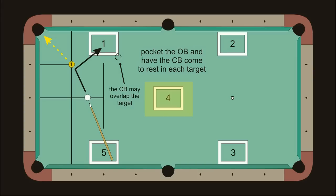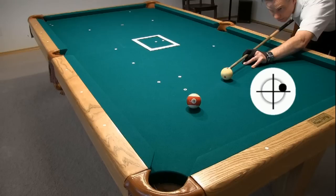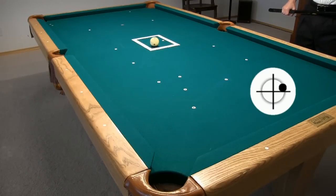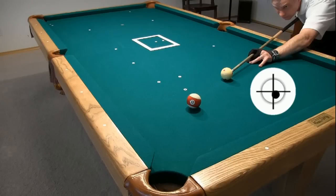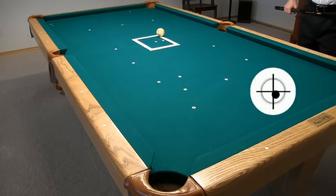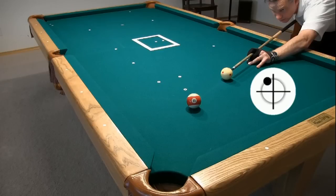Now let's look at the fourth target position. Here we can use a similar rolling cue ball path as we did for target position 3 — we just need a little more English than before. You could also use a stun shot with a touch of right English, but this won't be as easy to control. Again, here are some alternative paths to practice.